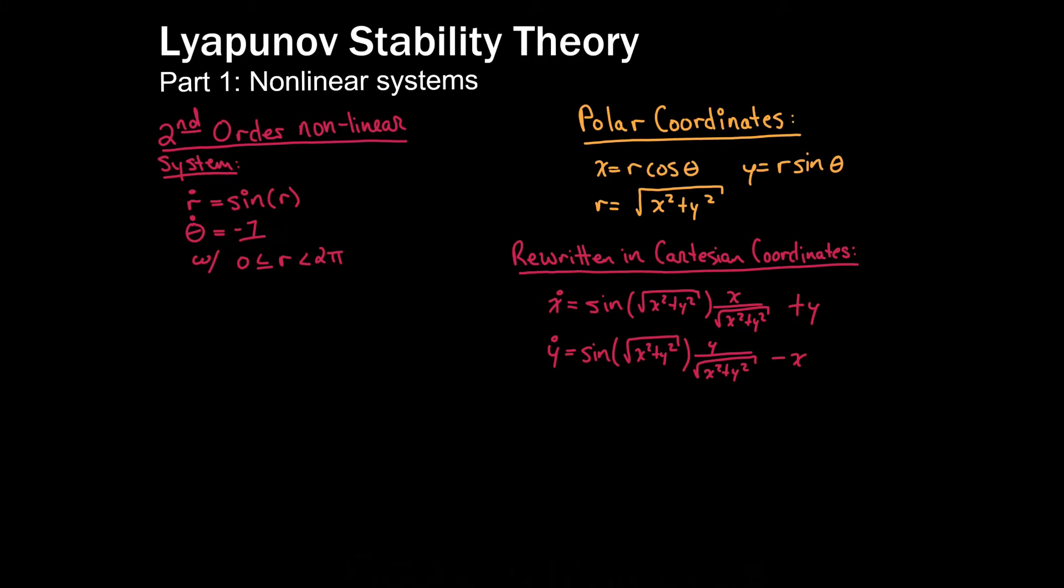One thing to note though is that if we plug in x and y are equal to 0, we see the x dot and y dot are equal to 0. That's a stationary or an equilibrium point. That's the only thing that we are going to take away from that analysis.